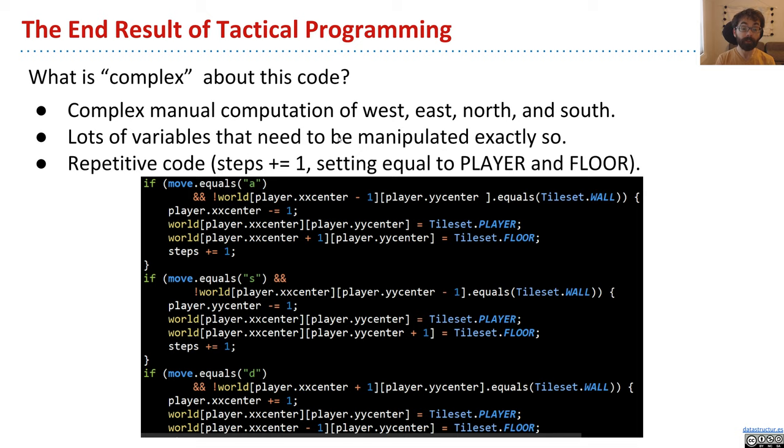There's another thing, which is there's so many variables that need to be manipulated in exactly some way. So we have to say the player's x center needs to go to the left, and then we need to set something equal to player and something equal to floor. But then if we push S, it's this other thing where it's yy center, and here now we have a plus one, and so forth. And that means it's hard to really know what's going on, and it's very hard to modify,